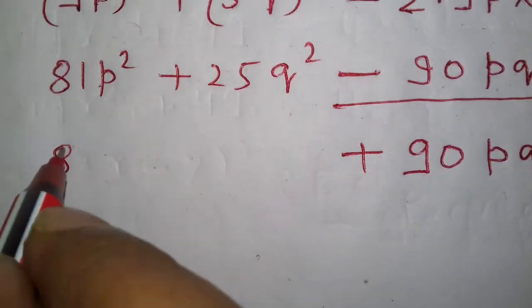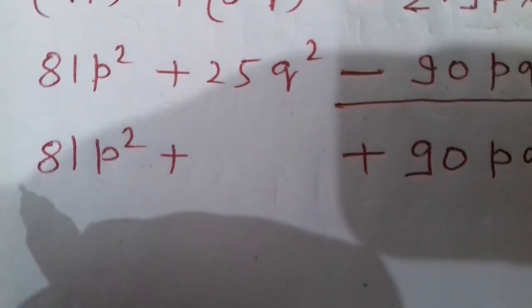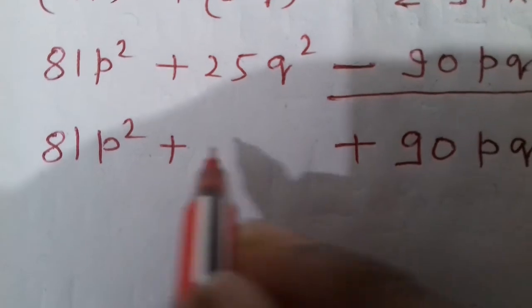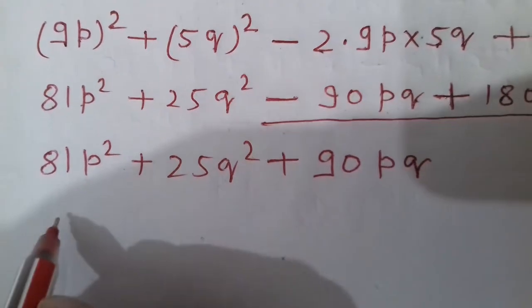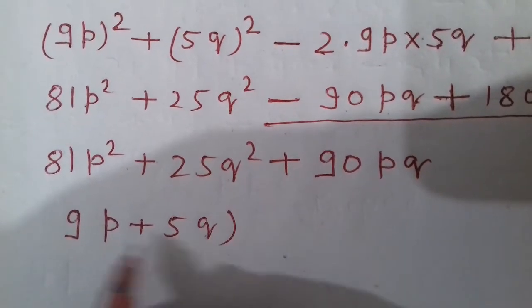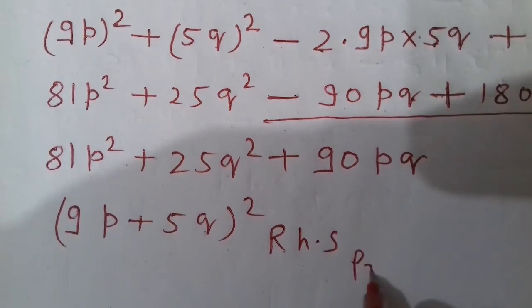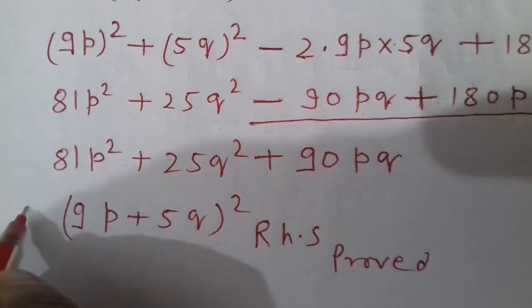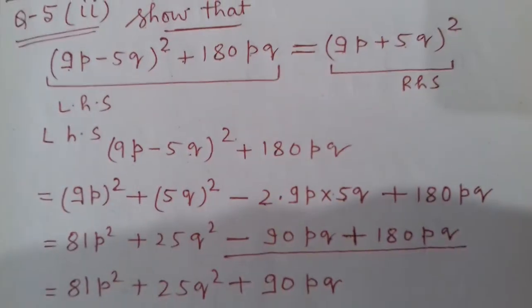We write 81p² + 25q² + 90pq, and this is the expansion of (9p + 5q)², and this is your right hand side. Proved. We put each equal step with equal sign. Thank you.